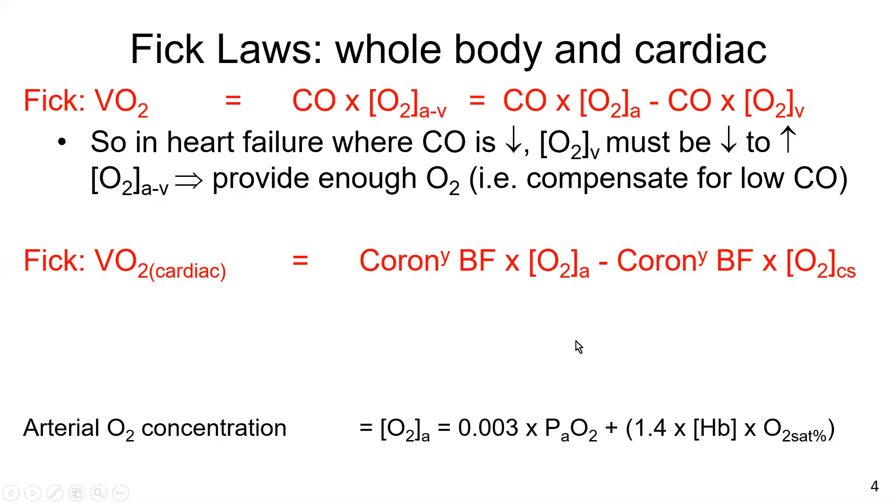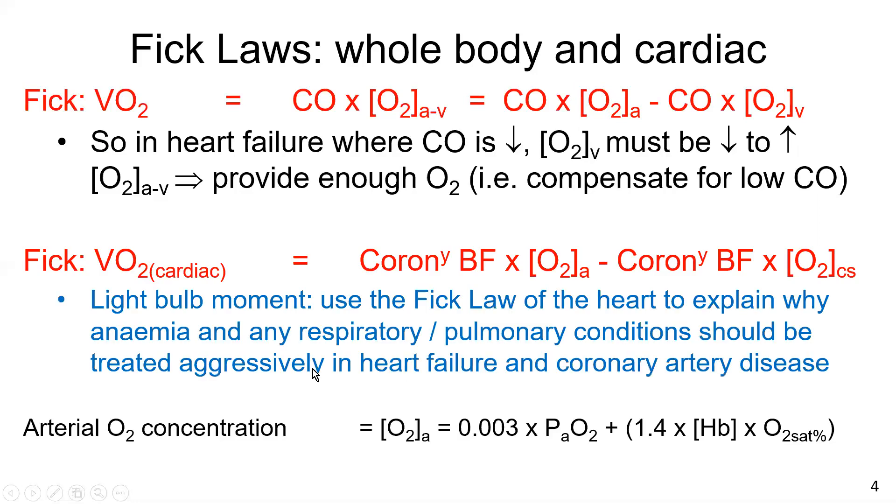In the heart itself, we can use the formula here for Fick to understand why O2 arterial must not be low, such as in many of the lung diseases and also in anemia. Because of this relationship of hemoglobin and O2 sats dominating O2 arterial concentration. These have to be corrected, treated aggressively in, for example, heart failure, where blood flow is low and coronary artery disease.